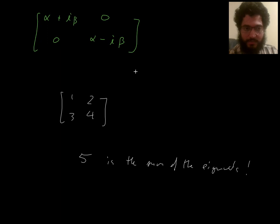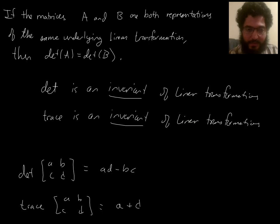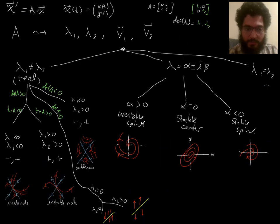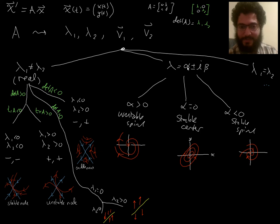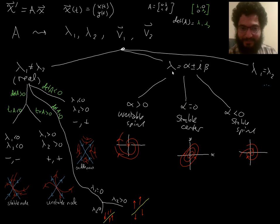The trace is also useful in the complex eigenvalue case. If the matrix in diagonal form has alpha ± i·beta on the diagonal, the trace equals 2·alpha — since the i·beta terms cancel. So the trace tells you the sign of alpha: if trace is positive, alpha is positive; if trace is negative, alpha is negative; if trace is zero, alpha is zero. This immediately lets you distinguish between spiral source, spiral sink, and center.